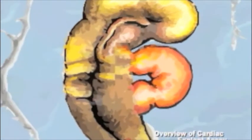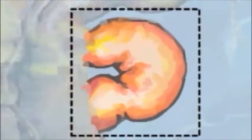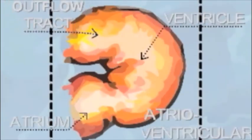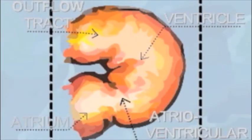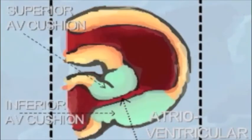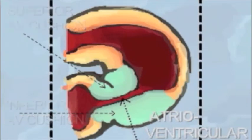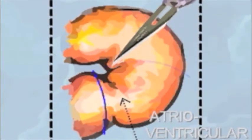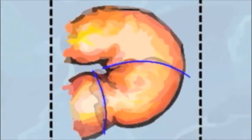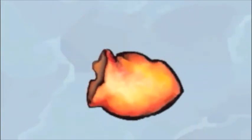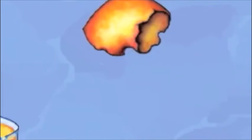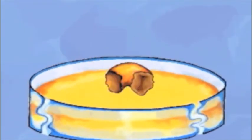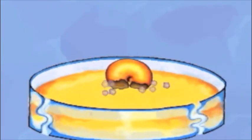Our lab uses collagen gels to study EMT in the atrial ventricular canals of chicken embryonic hearts. We use collagen from rat tails that have been purified through dialysis. Collagen gels are useful in studying EMT because the rat tail collagen mimics the interstitial collagen found in mesenchymal tissue.